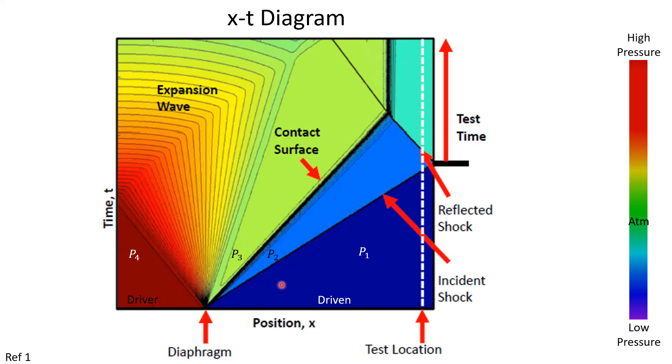So, somewhere in there you can see our familiar four pressures: the initial low pressure P1 of the driven section, the shocked gas pressure P2, the expanding gas pressure P3, and the initial high pressure driver gas P4.